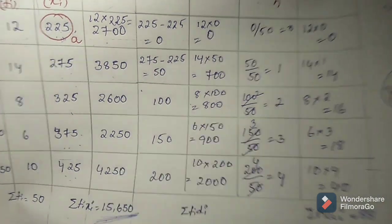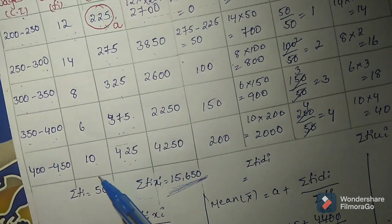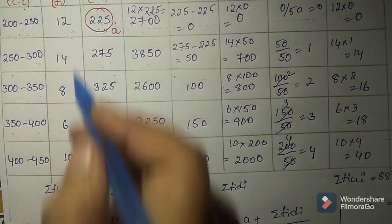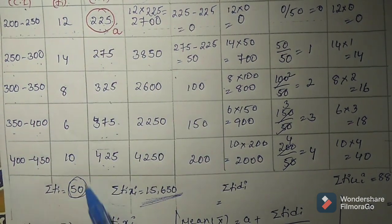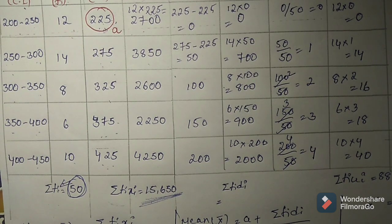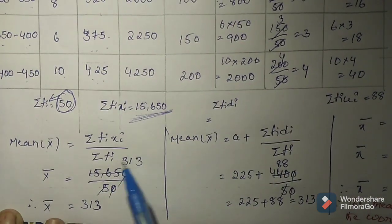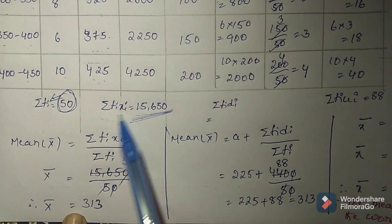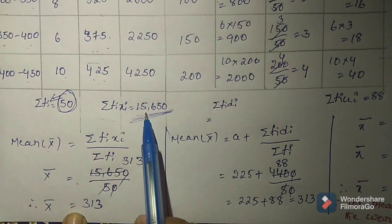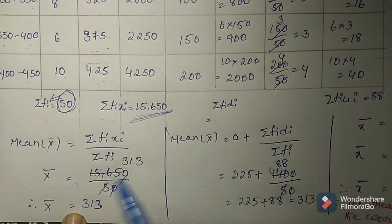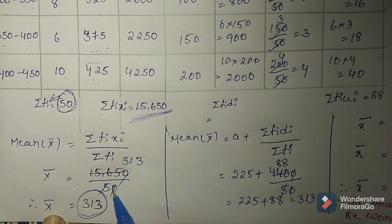Find the sum of the frequencies. Adding all fi values: 12 plus 14 plus 8 plus 6 plus 10 equals 50. This is sigma fi equals 50. The formula for direct method: x̄ equals sigma fi xi by sigma fi. Substituting: x̄ equals 15650 by 50, and dividing gives x̄ equals 313.